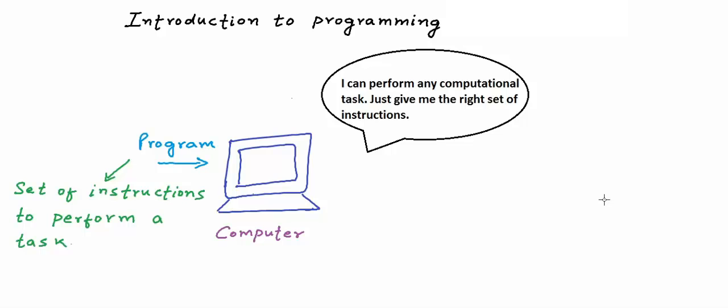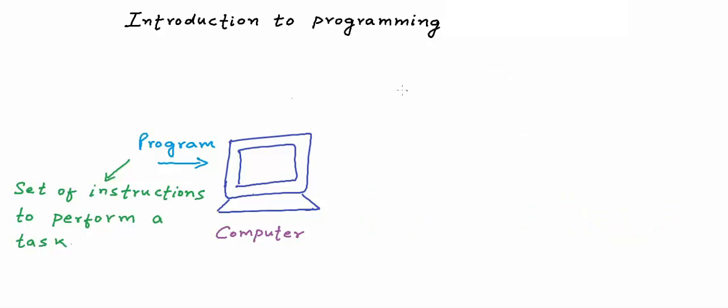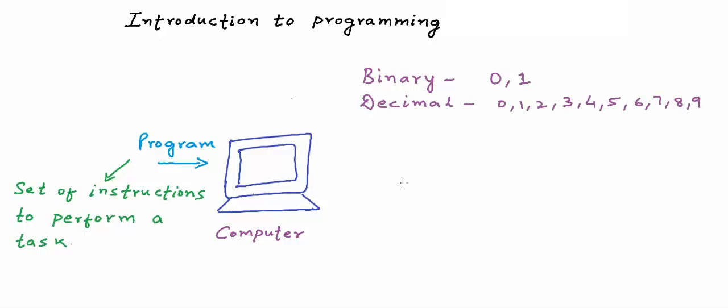A program is a set or sequence of instructions that you give to the computer, and the computer would execute those instructions. In what language can I give these instructions to the computer? Can I give these instructions in a natural language like English? You must have heard that a computer understands binary. Binary is the language of computers. Binary is a number system that has only two digits, 0 and 1. The number system that we use has 10 digits from 0 to 9, and we call it the decimal number system.